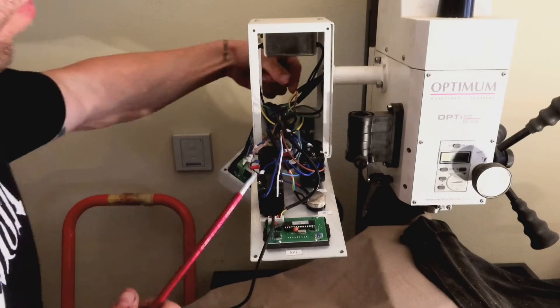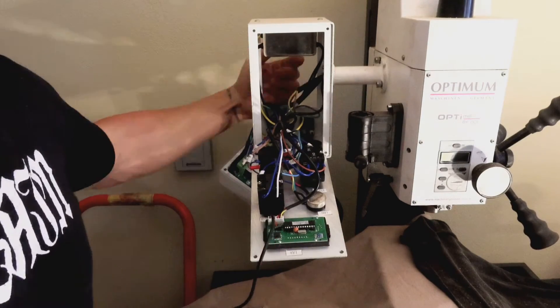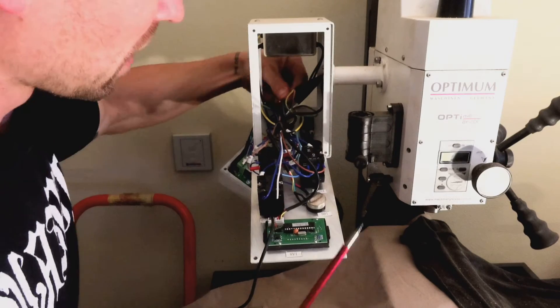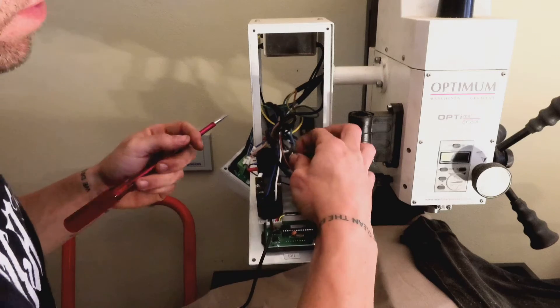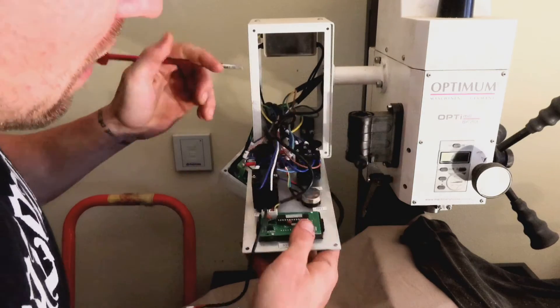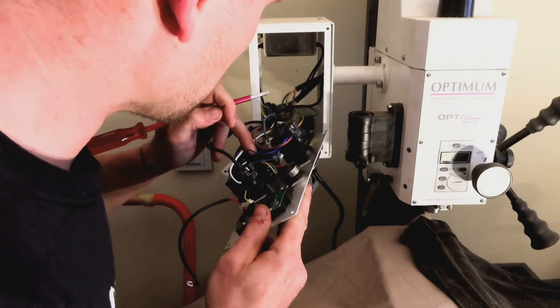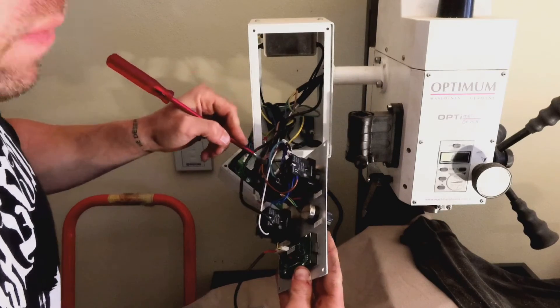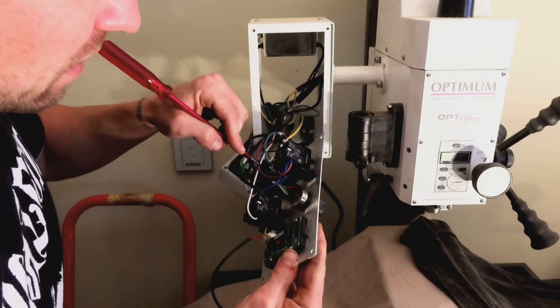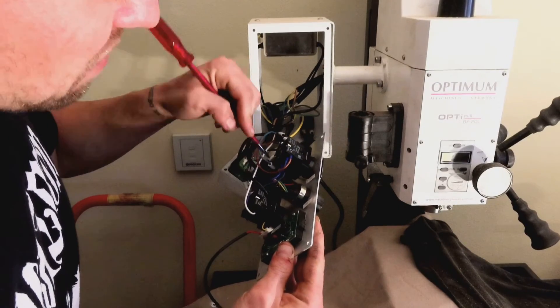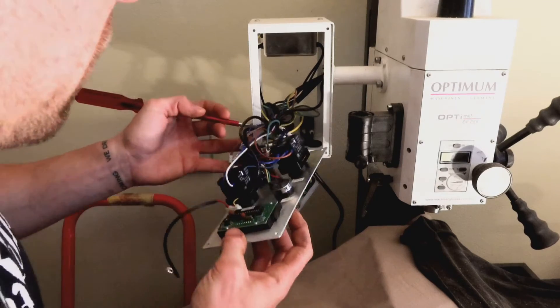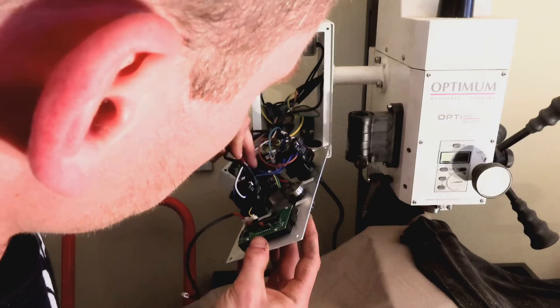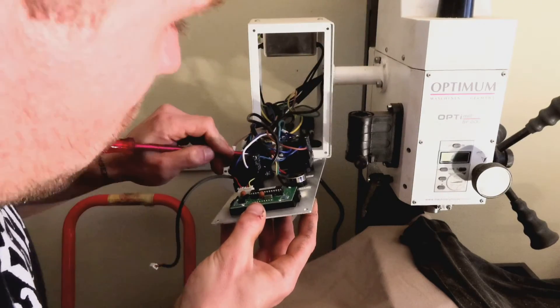Next up we have the blue which is AC neutral. So that has a number five on the cable sleeve just there. Now he is going into number—I won't be able to get in there, but if you have a look in there on the forward reverse switch, there's actually a receiver labeled number five.